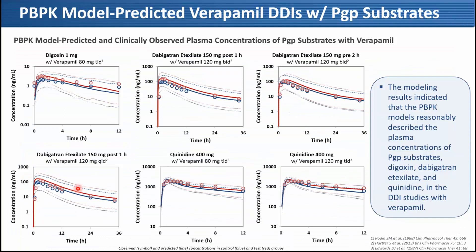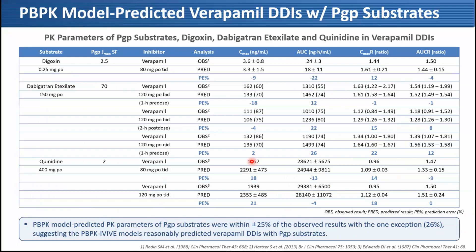For the verapamil DDI study, we reasonably predicted plasma concentrations of digoxin, dabigatran etexilate with three different dosing regimens, and quinidine with two dosing regimens. Prediction error of all PK parameters was within 25%, with one exception of 26%. Our modeling approach reasonably predicted verapamil DDI results with P-gp substrates, and again we did not need an in vitro IVIV scaling factor for P-gp KI — in vitro KI reasonably predicted DDI.